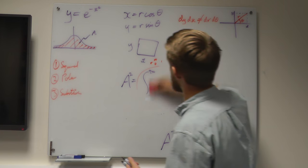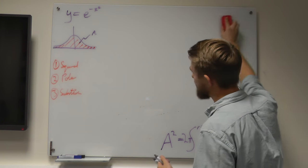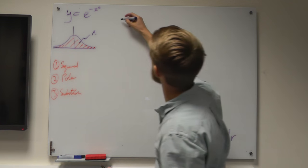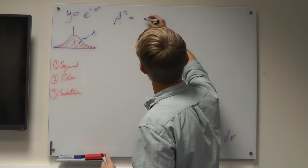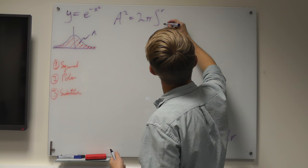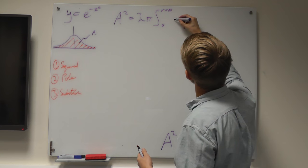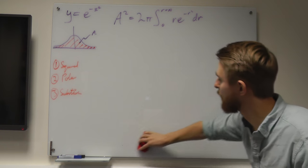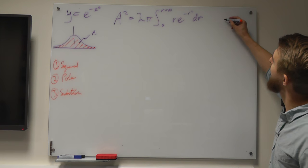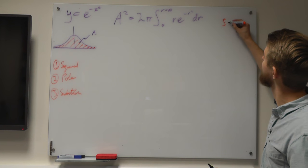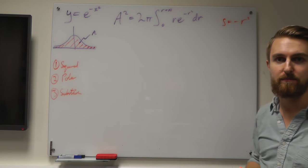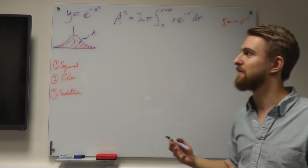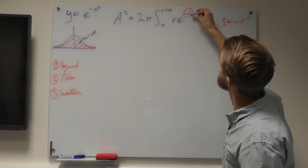We're now going to move on to our final step, which is the substitution step. We just need to work out how to do this remaining integral. A squared equals two pi times the integral between r equals zero and r equals infinity of r e to the minus r squared dr. We're going to make the following substitution: we'll say s equals minus r squared.